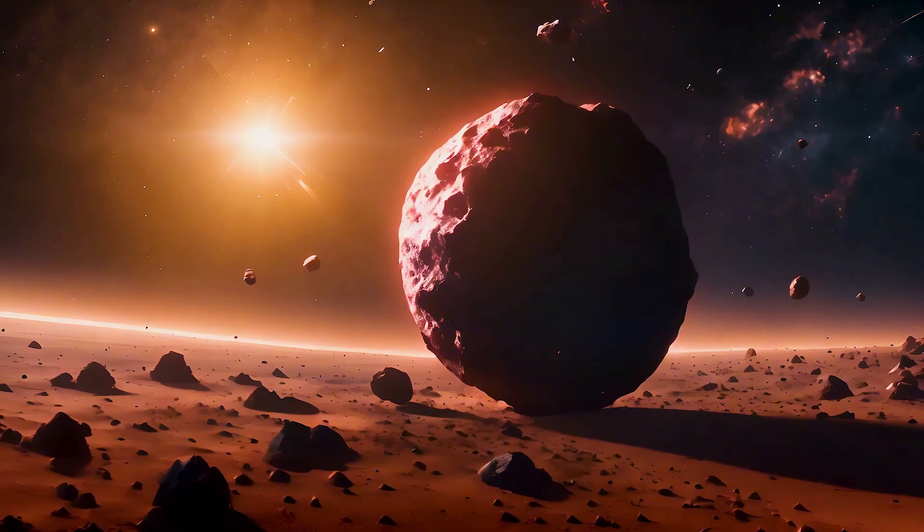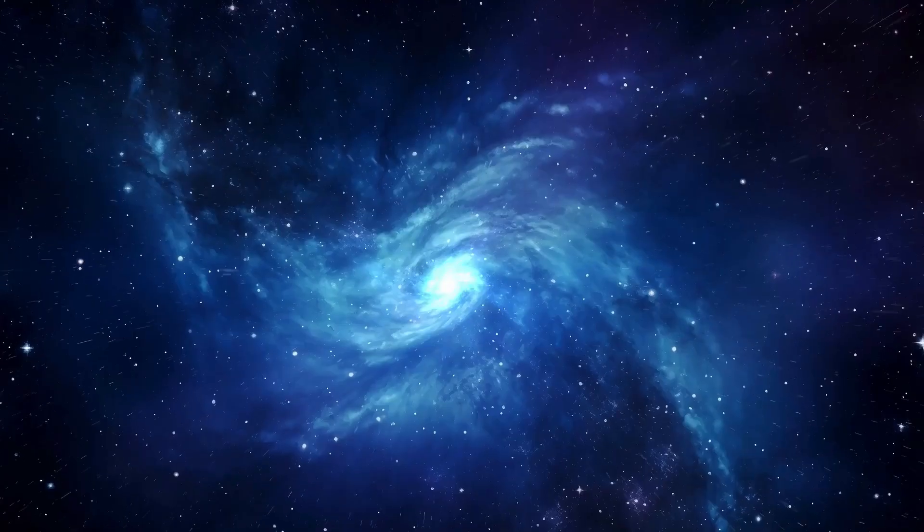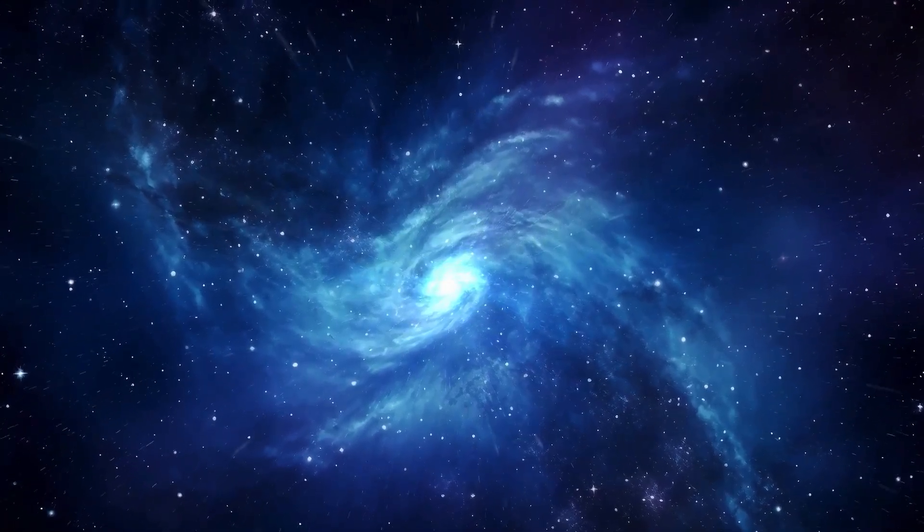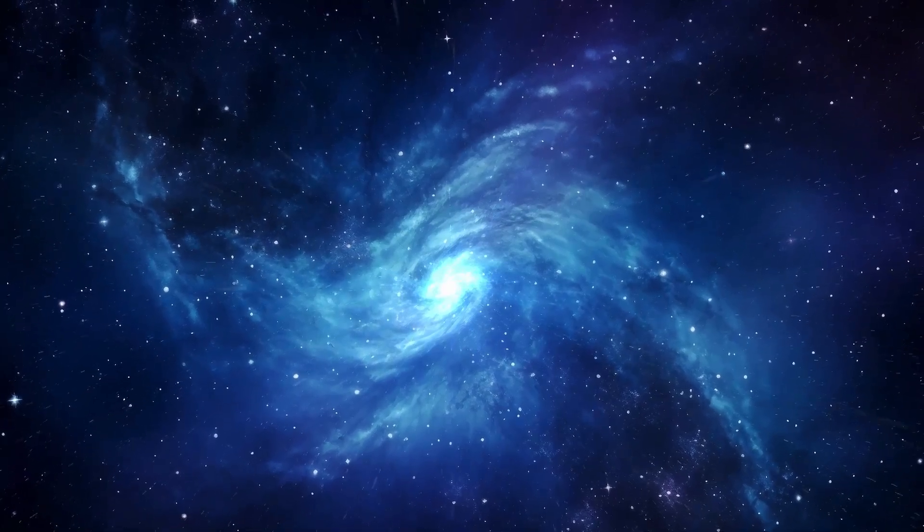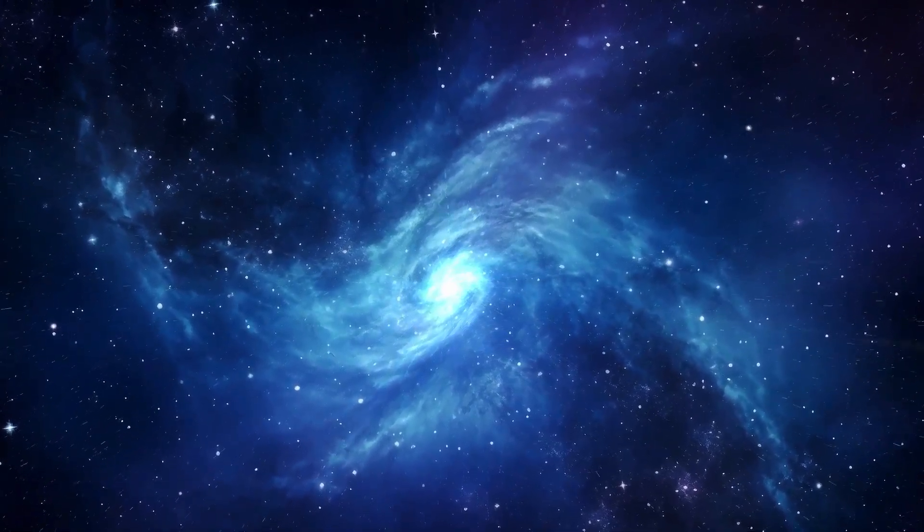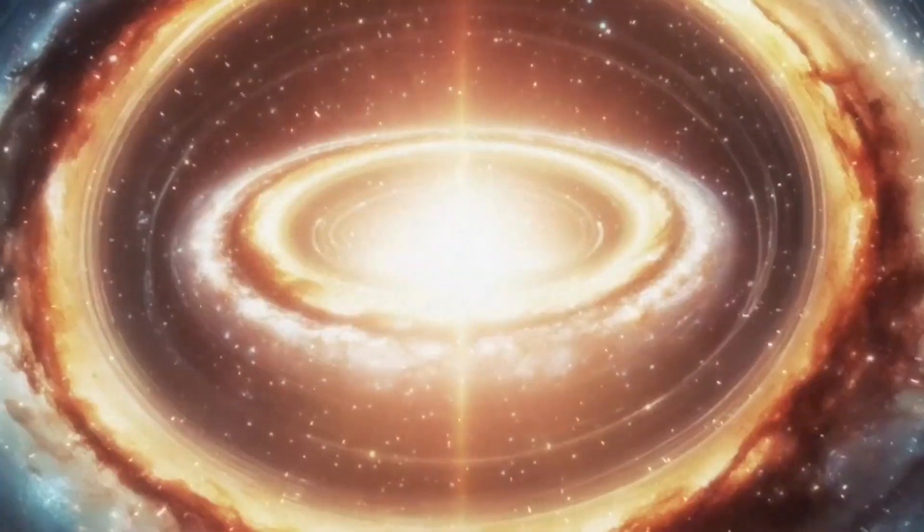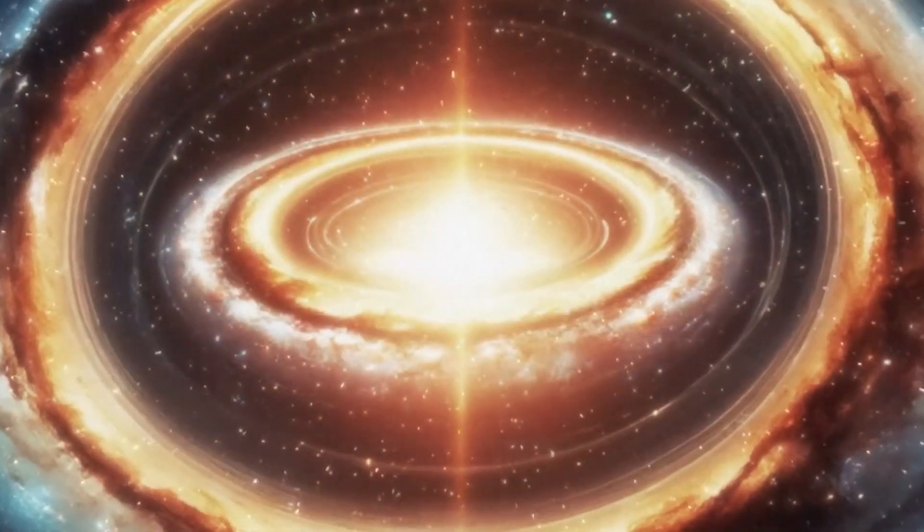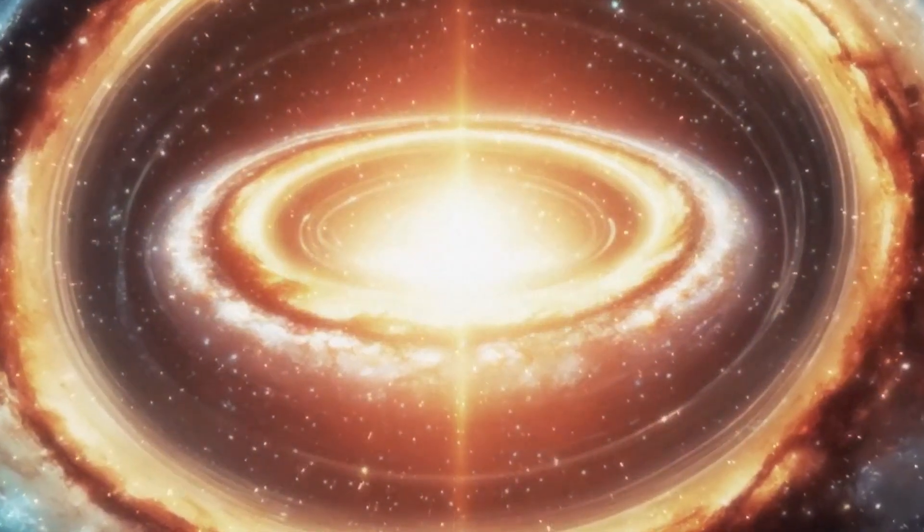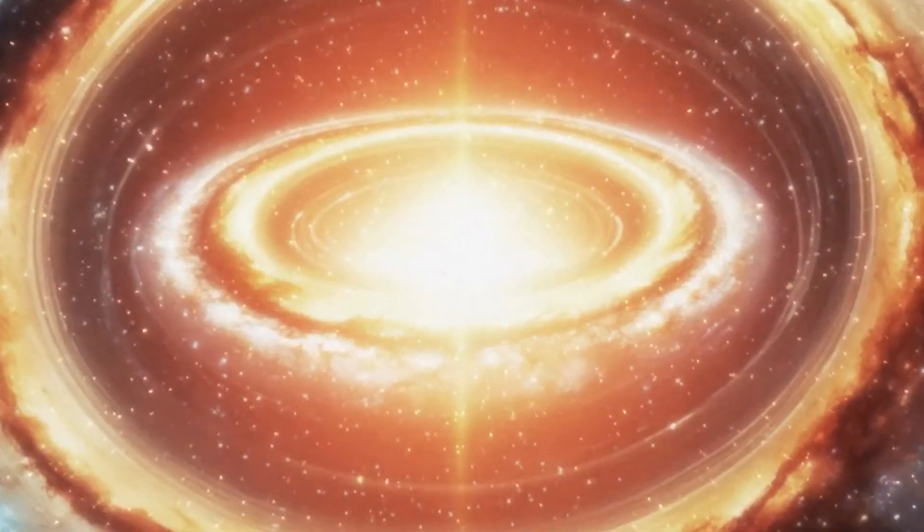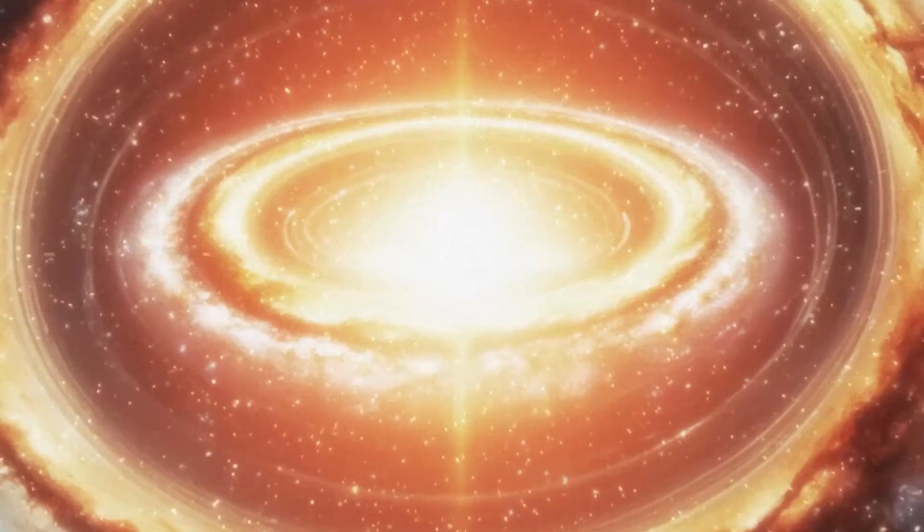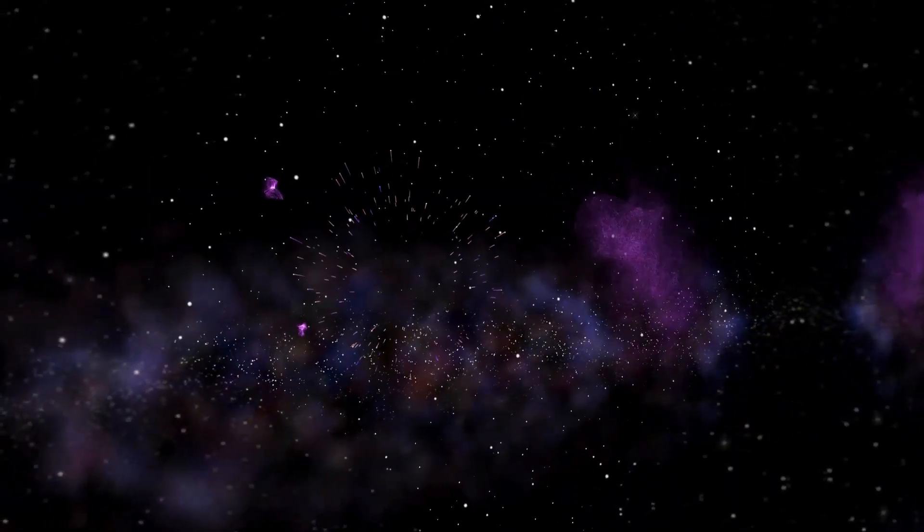While the visible light emitted by a supernova would undoubtedly be a striking sight, the real threat lies in the high-energy radiation accompanying such an explosion. This radiation, typically in the form of X-rays and gamma rays, would have far-reaching consequences. One of the most pressing concerns is its potential to deplete Earth's protective ozone layer. Without the ozone layer, life on Earth would be exposed to harmful levels of ultraviolet radiation, potentially leading to extinction events.